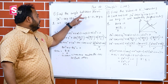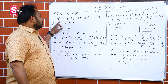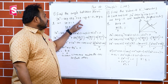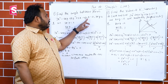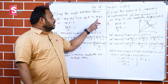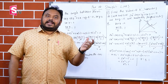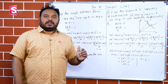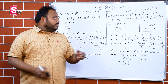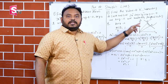The first problem: given the equation 7x² minus 4xy plus 8y² plus 2x minus 4y minus 8 equals 0, and the line 3x minus y equals 2. We are finding the angle between the curve and the line.